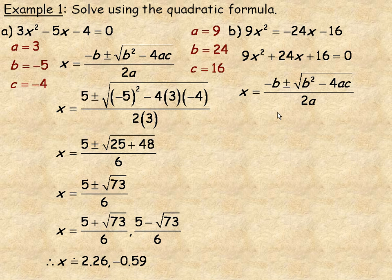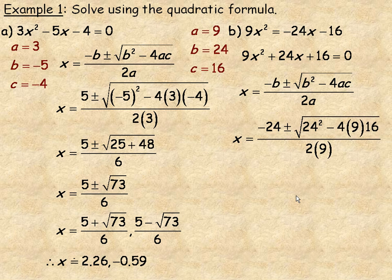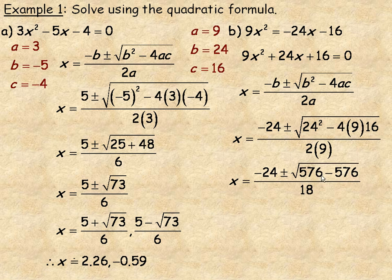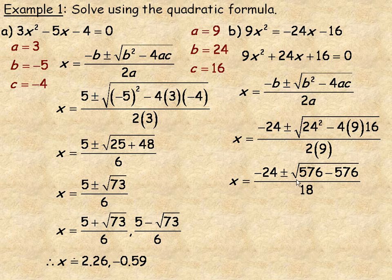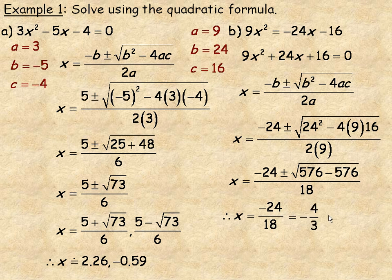Substituting 9, 24, and 16 in place of a, b, and c: underneath the square root, 24 squared is 576, and 4 times 9 times 16 is also 576. So underneath the square root sign we get 0. Since the square root of 0 is 0, this simplifies to just negative 24 over 18. Dividing both by 6 reduces this to negative 4 thirds. By the way, when the discriminant is 0, this means the quadratic could have been factored as a perfect square trinomial — in this case (3x plus 4) squared — but the quadratic formula still gives the correct solution.